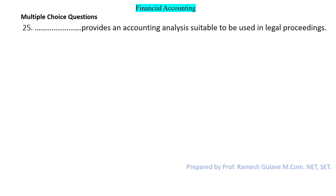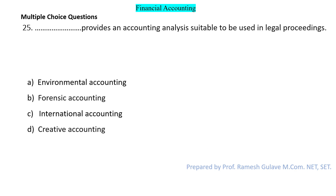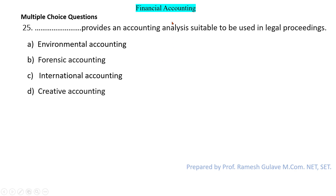The next question says: dash provides an accounting analysis suitable to be used in legal proceedings. The options are environmental accounting, forensic, international, and creative accounting. Forensic accounting provides an accounting analysis suitable for use in legal processes. Forensic accounting is basically used to find out frauds in financial statements. So here option B is the right answer.